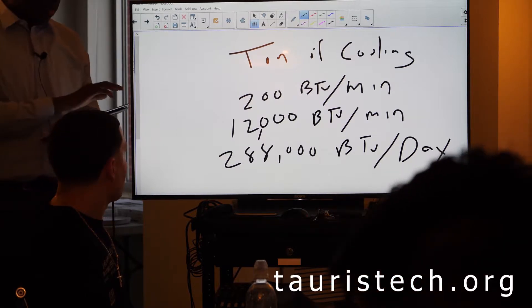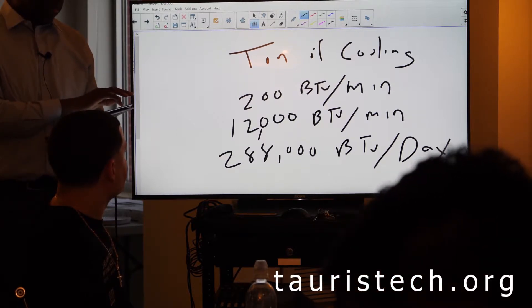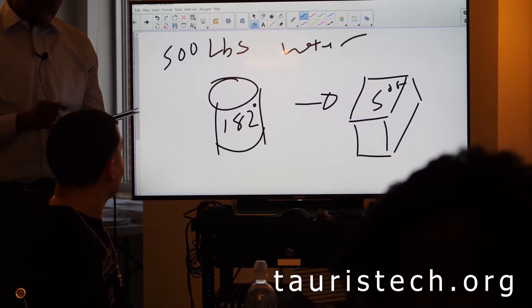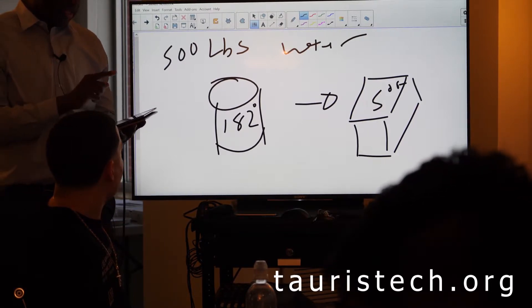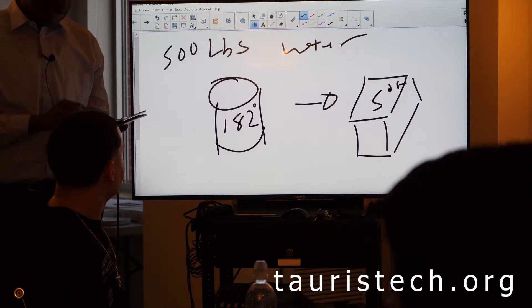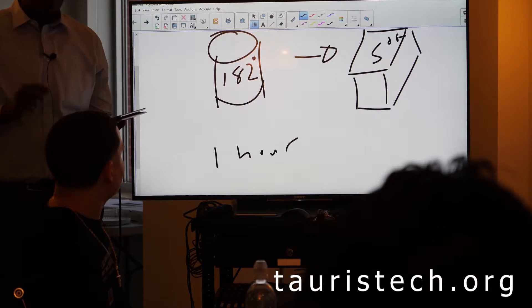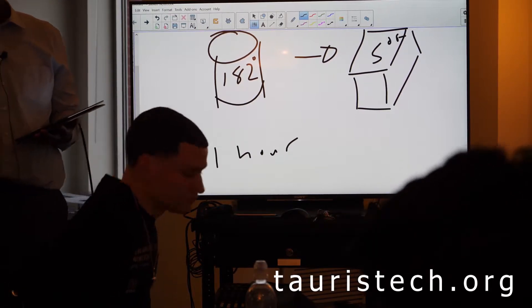I have 500 pounds of water and I want to go from 182 degrees to 5 degrees Fahrenheit in one hour. How many tons of cooling do I need?